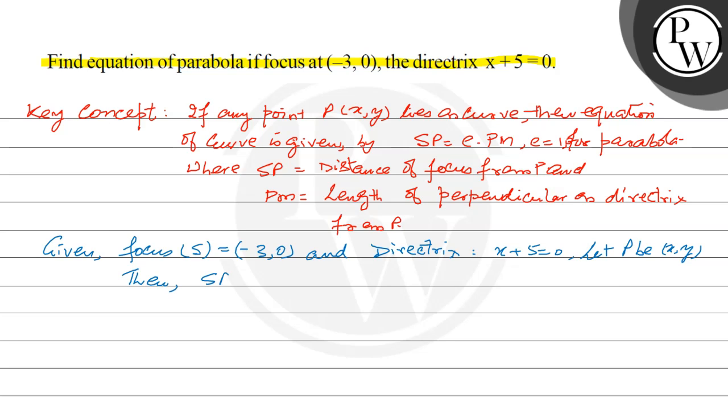Then SP will be equal to square root of (x+3)² + (y-0)² and PM will be equal to (x+5) divided by square root of 1² plus 0², that is x+5.